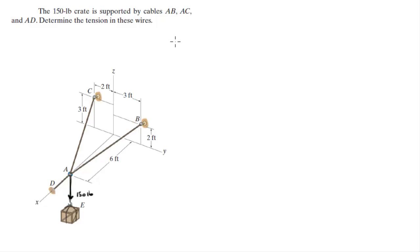First I'm going to find the positions of a, b, and c. So a sits at 6 in the i plus 0 in the j plus 0 in the k. b sits at 0 in the i plus 3 in the j plus 2 in the k. And c sits at 0 in the i minus 2 in the j plus 3 in the k.